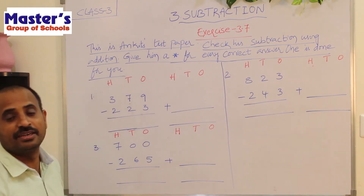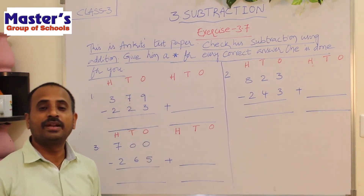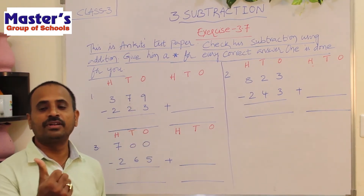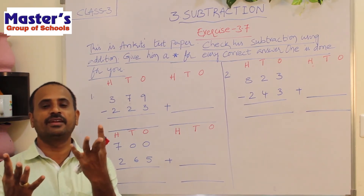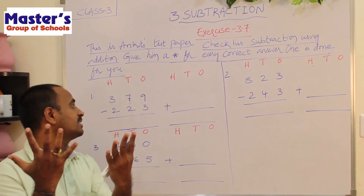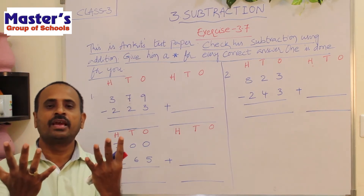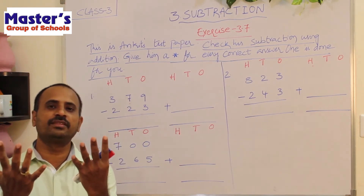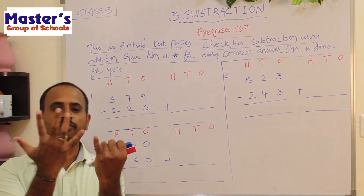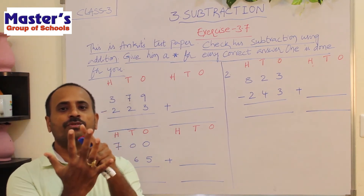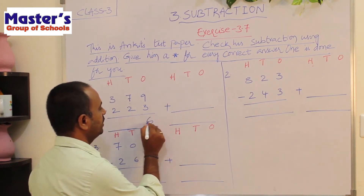The first number is 379 and the second number is 223. Start subtraction from ones place: 9 and 3 are present. Open 9 fingers, close 3 fingers: 1, 2, 3. There are 6 fingers remaining. Write 6 under ones place.